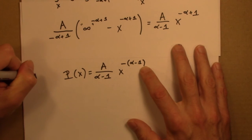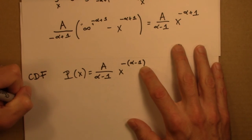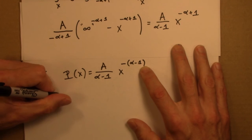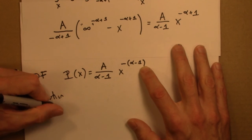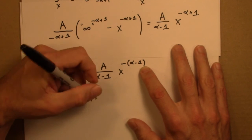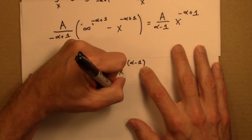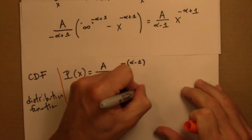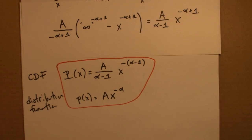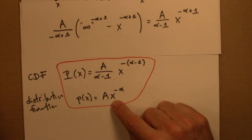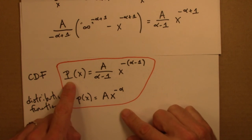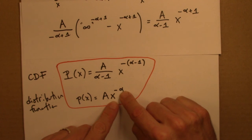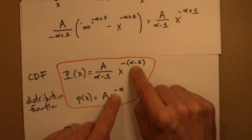So this is the cumulative distribution function. This is the distribution function. So this is the main result. If we have a power law distribution, a probability density that's a power law, the cumulative distribution function is also a power law with a different exponent. If this is exponent alpha, this is exponent alpha minus 1.